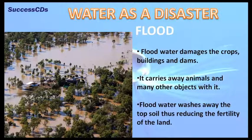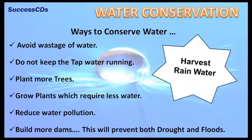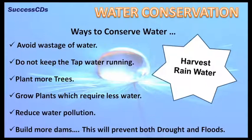Unusually heavy rain causes a natural disaster called flood. Floods raise the water level of rivers, lakes, and ponds, causing them to overflow and submerge villages and cities. Potable water and food supply get affected, causing deaths, diseases, and destruction. Flood water damages crops, buildings, and dams, carries away animals and objects, and washes away topsoil, reducing the fertility of the land. Ways to conserve water include: avoid wastage, plant more trees, grow plants requiring less water, reduce water pollution, build more dams, and harvest rainwater.